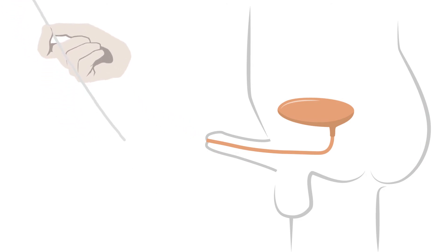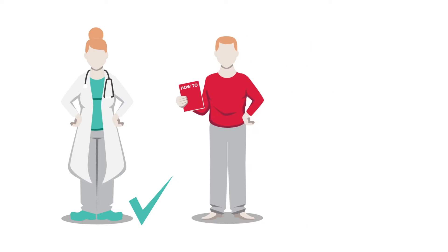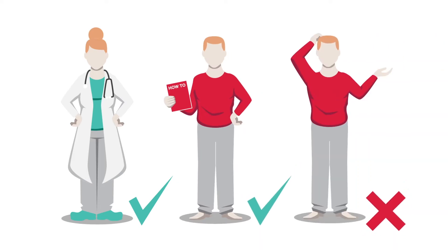Intermittent self-catheterization is performed by intermittently inserting a catheter, which is a tube to drain the urine, into the urethral opening and advancing it into the bladder to allow the bladder to empty. Only people who know the correct technique of proper insertion and how to use the catheter should perform this procedure.